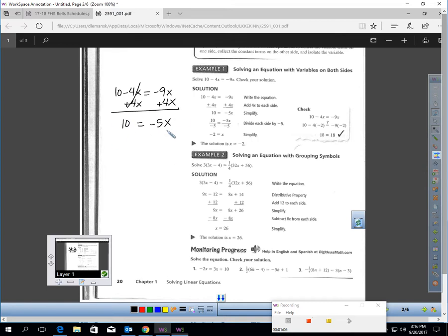This should now be easy to isolate the variable and solve, which is step three. Divide each side by negative 5, x equals negative 2. If I plug a negative 2 in, am I getting the same thing on each side? They're getting that 18 equals 18. It checks out.